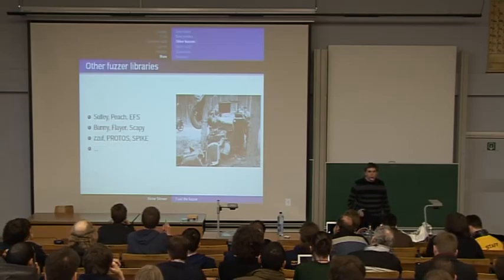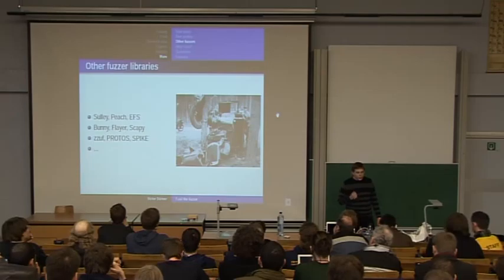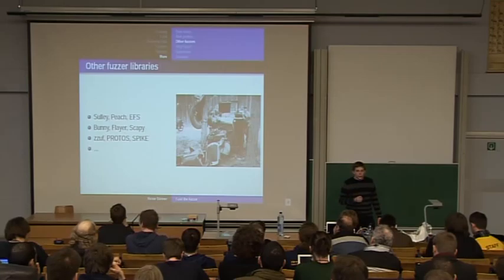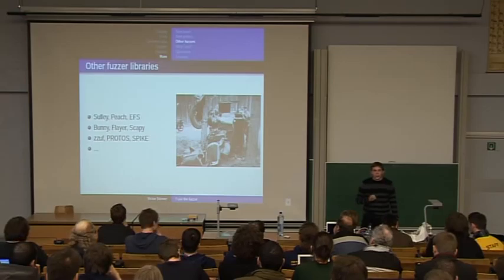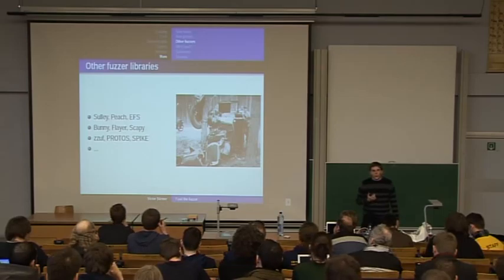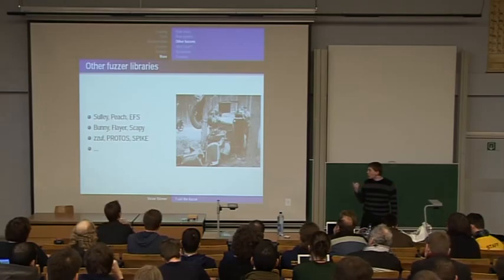Fusi is only one library, but there are a lot of other free software fuzzers, like Sulley, Peach, and EFS, which are the three most important. There is also Bunny, Flayer, and Scapy. I think Flayer is most interesting because it uses Valgrind to detect memory errors and also for code coverage. Last year, Samosvat presented ZAF. There is also SPIKe and Codenomicon, which are network fuzzers.